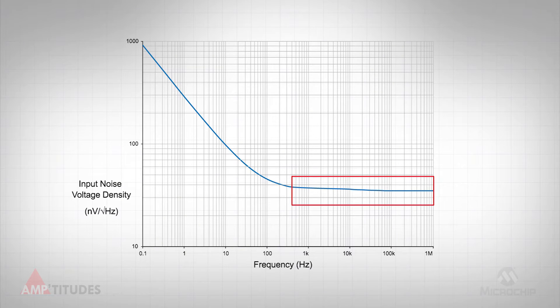Both of these noise specifications are specified where the white noise of the amplifier dominates, eliminating the effects of 1 over f noise. Voltage noise density is typically expressed as nanovolts per root hertz, and similarly, current noise is expressed as picoamps per root hertz.